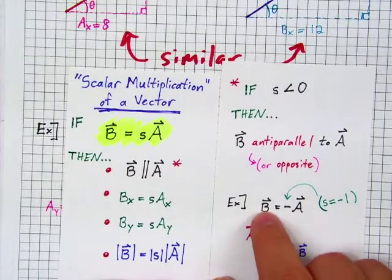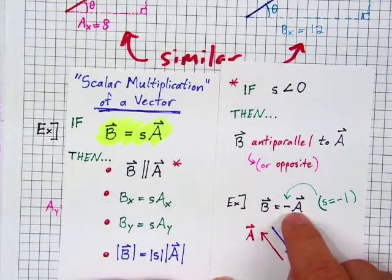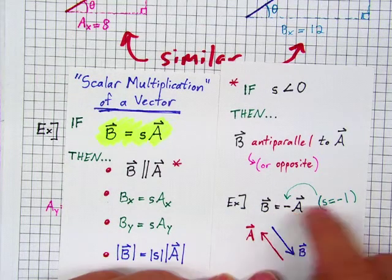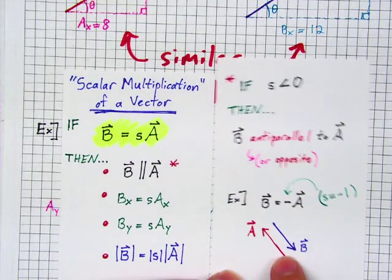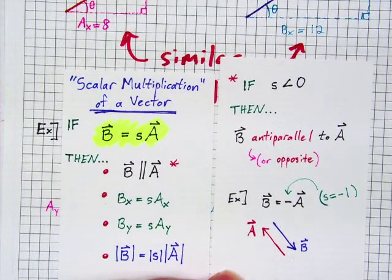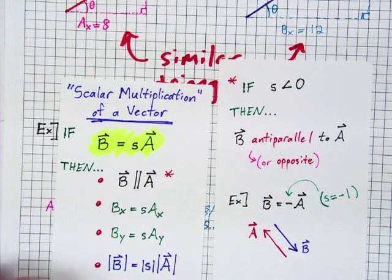So, example, if you have just b equals minus a, then here the scalar there is minus 1, s is minus 1 hidden there, then a and b would just look like this. a and b would be the same magnitude, but just opposites of each other.